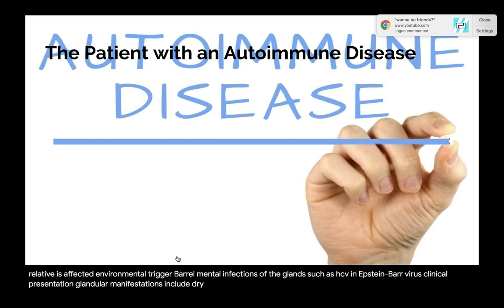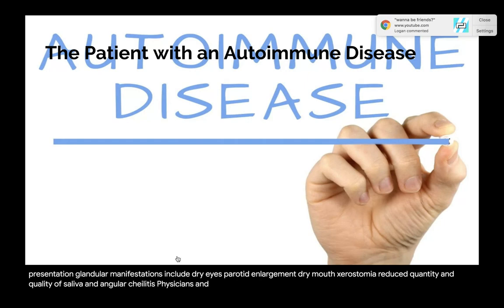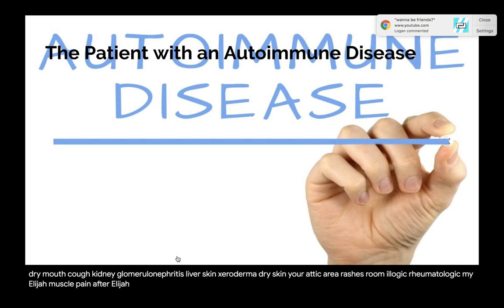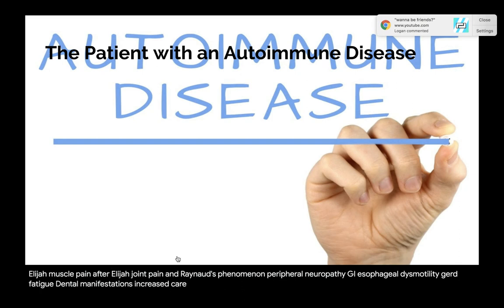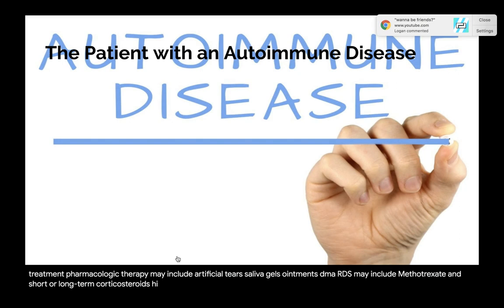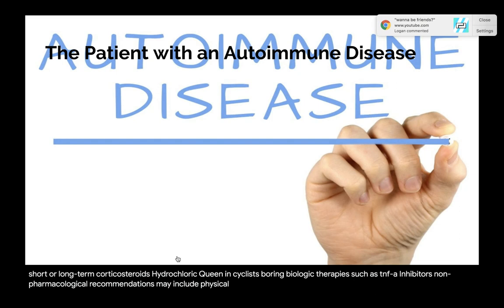Clinical presentation of SS: glandular manifestations include dry eyes, parotid enlargement, dry mouth (xerostomia), reduced quantity and quality of saliva, and angular cheilitis. Extra-glandular manifestations include: recurrent bronchitis or pneumonia, pulmonary fibrosis, chronic dry cough; glomerulonephritis; dry skin, urticaria, and rashes; myalgia, arthralgia, and Raynaud's phenomenon; peripheral neuropathy; esophageal dysmotility and GERD; fatigue. Dental manifestations include increased caries risk, increased biofilm accumulation with higher numbers of cariogenic bacteria, and oral candidiasis.